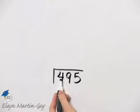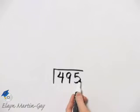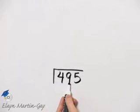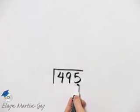Remember it does if it goes into the sum of the digits. Four plus nine is thirteen. Thirteen plus five is eighteen. Three divides into eighteen, so three should divide into this number.